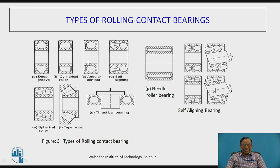This is an angular contact ball bearing. Here the shape of the outer race and inner race is adjusted so that the balls have contact with the inner and outer race along an inclined line of action. The load is transmitted from inner race to outer race along this inclined line. As the line of action of load is inclined, it can be resolved into vertical and horizontal components, so it can sustain radial load as well as thrust load. Whenever the bearings are subjected to combined moderate radial and thrust loads, these angular contact bearings are best suitable.